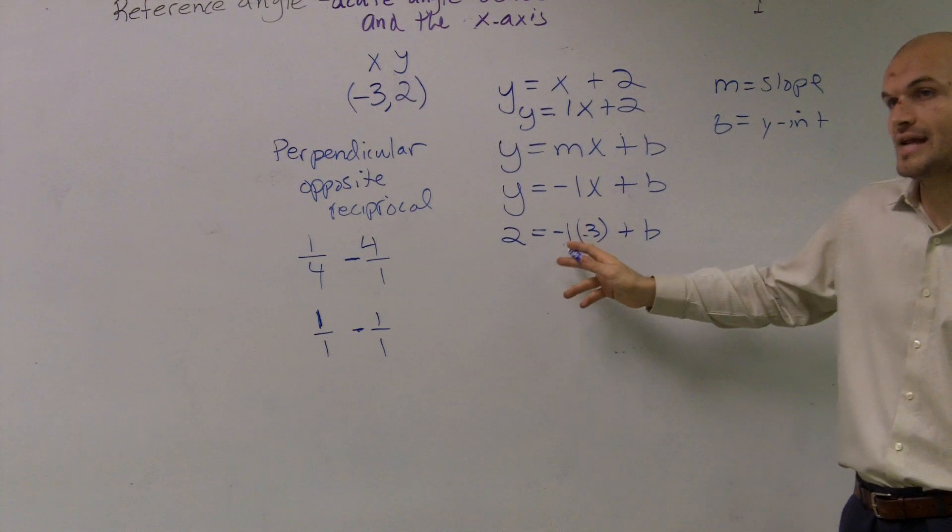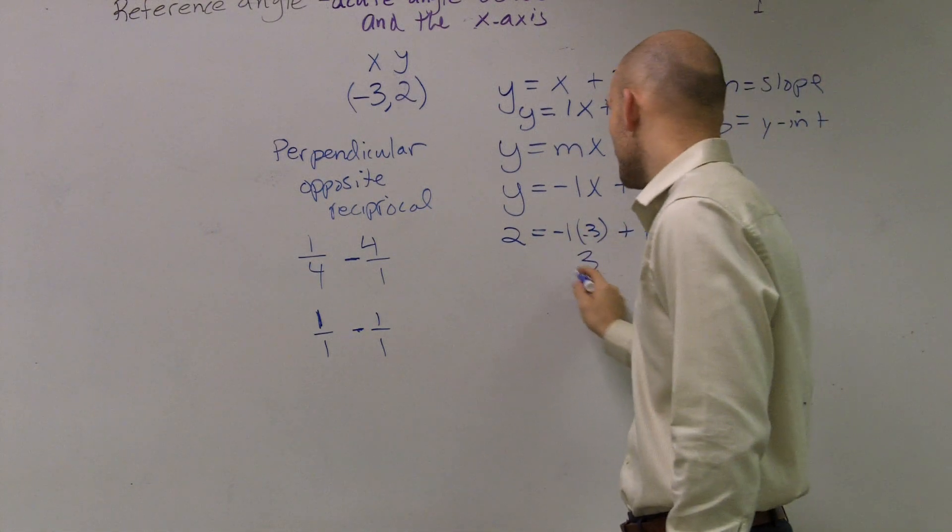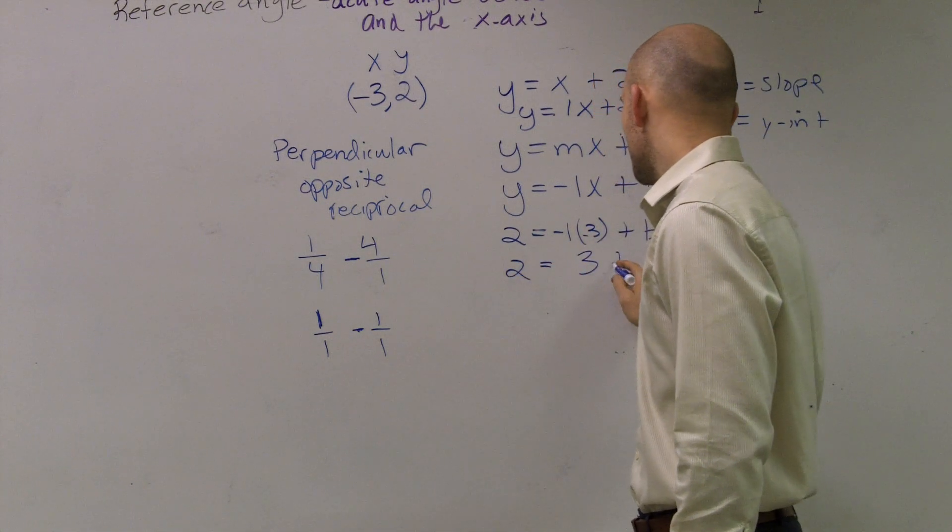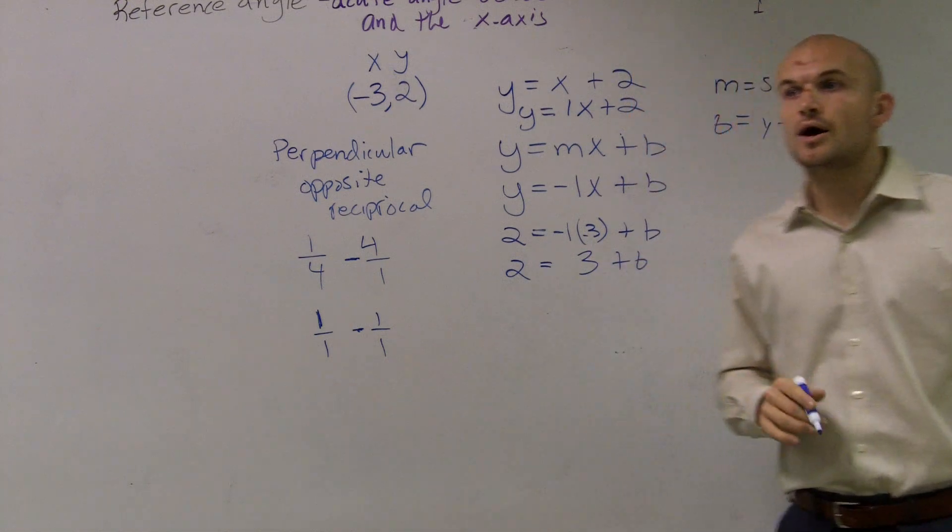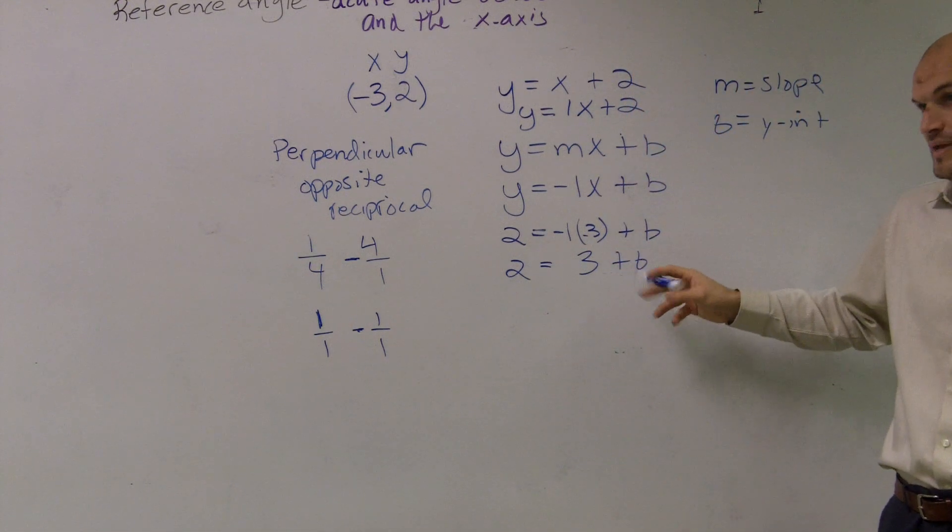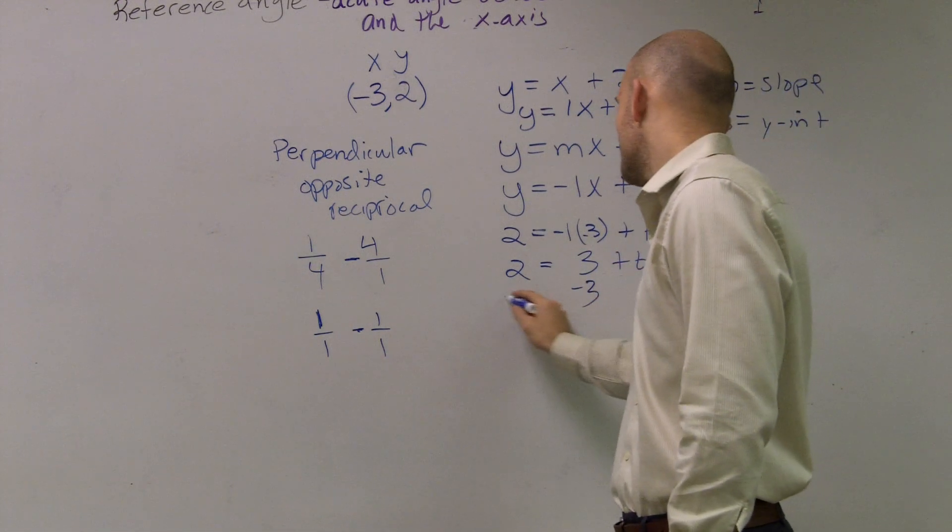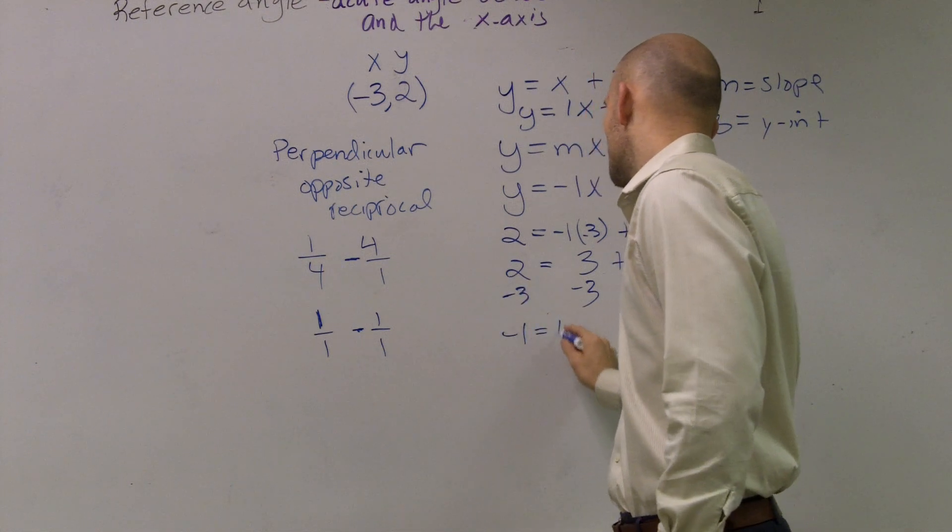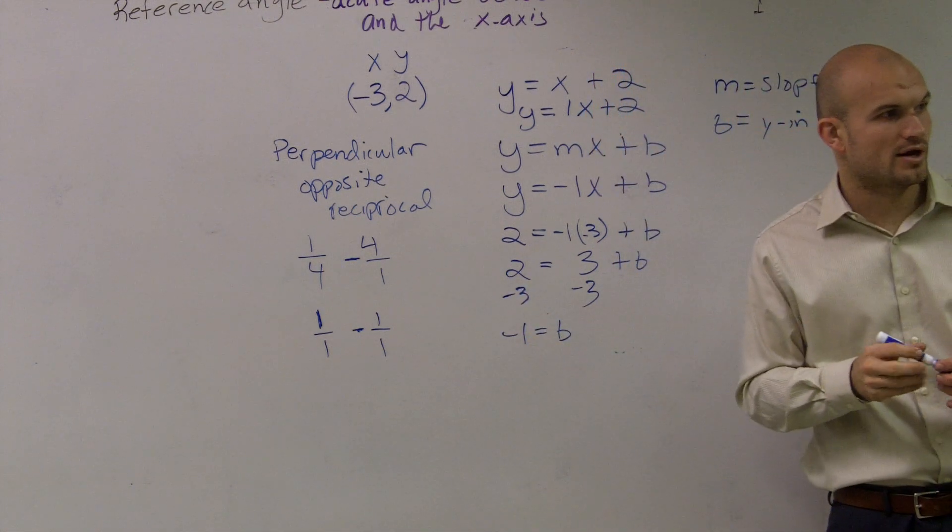So therefore, I do negative three times negative one is going to give me a positive three. So three equals two plus b. Now, when I solve for b, I'm going to subtract the three. And I actually get a y-intercept of negative one.